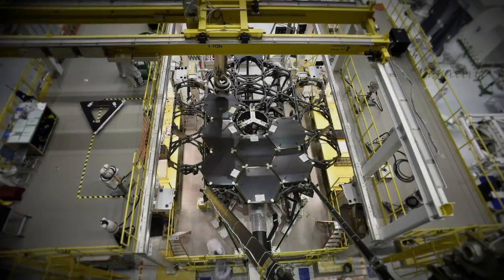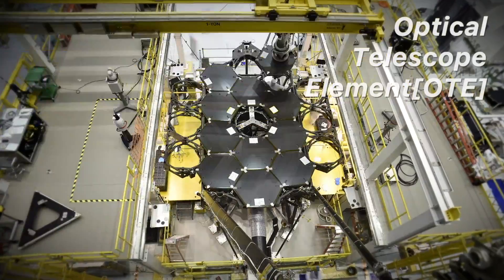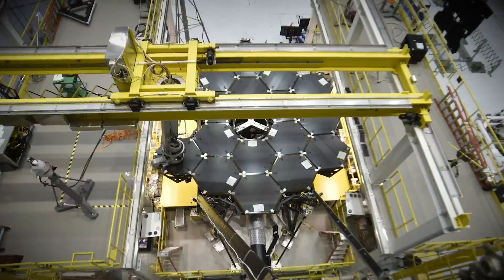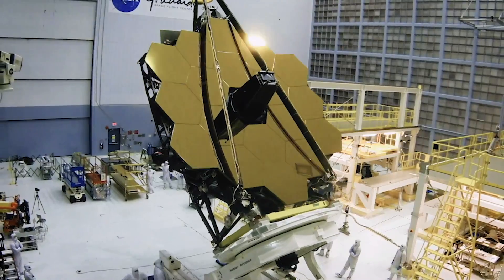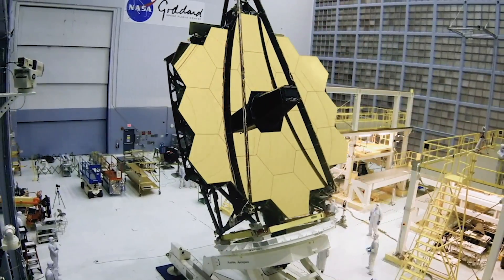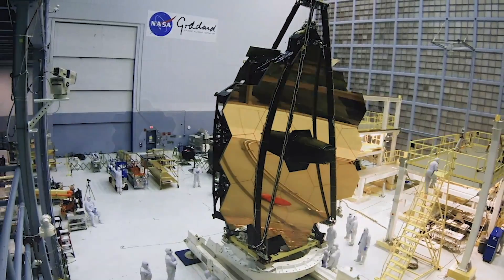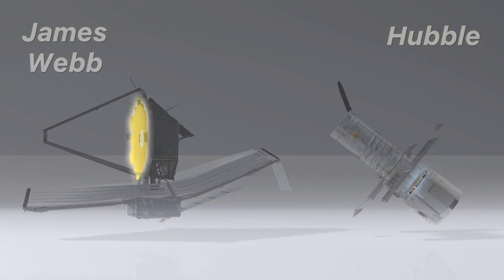The James Webb Telescope's primary mirror, the Optical Telescope Element or OTE, consists of 18 hexagonal mirror segments made of gold-plated beryllium, which combine to create a 6.5-meter diameter mirror, compared to Hubble's 2.4-meter mirror.